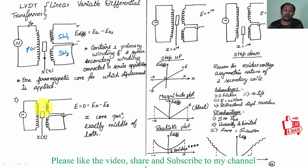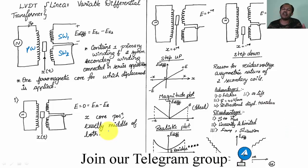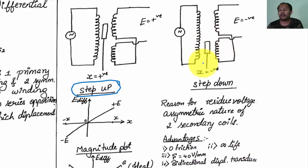When the ferromagnetic core is exactly in the middle, there is no displacement and EA equals EB, giving EMF output equal to zero — the core has not displaced forward or backward. When the core moves upward, ES1 is greater than ES2 and you get a positive output voltage, acting like a step-up transformer. When the core is pulled downward, ES1 is less than ES2 and you get a negative output, acting like a step-down transformer.